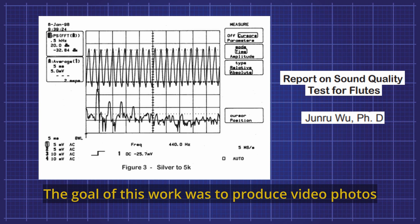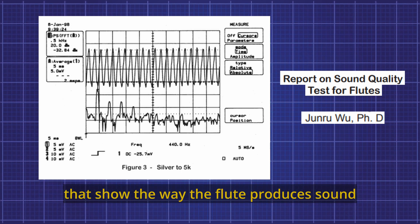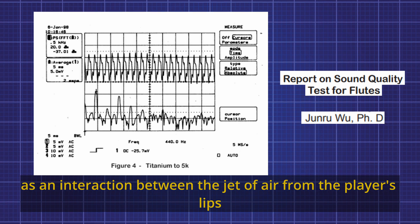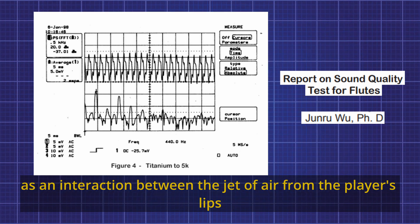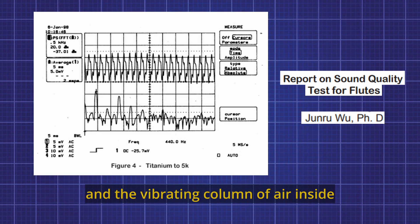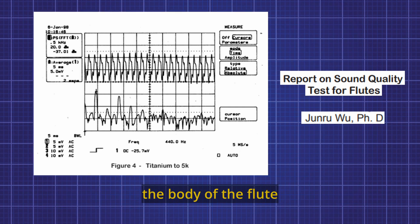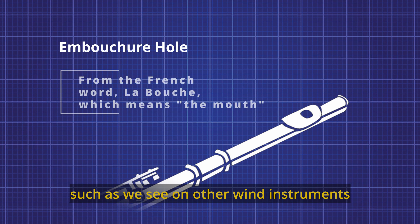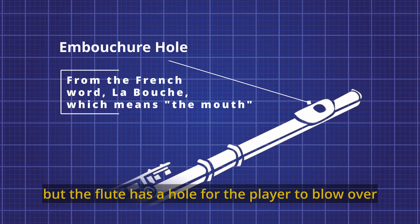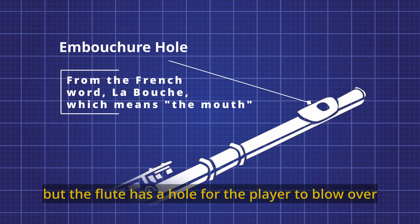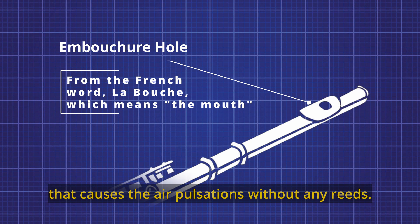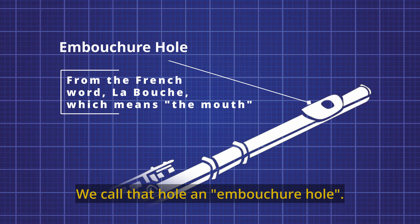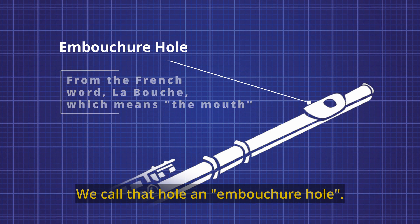The goal of this work was to produce video photos that show the way the flute produces sound as an interaction between the jet of air from the player's lips and the vibrating column of air inside the body of the flute. The flute doesn't use a reed such as we see on other wind instruments, but the flute has a hole for the player to blow over that causes the air pulsations without any reeds. We call that hole an embouchure hole.